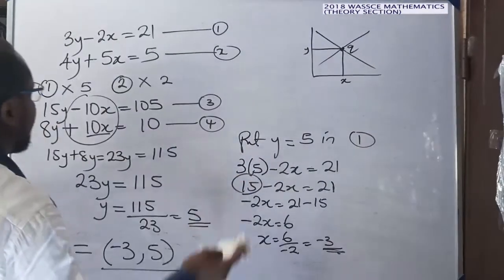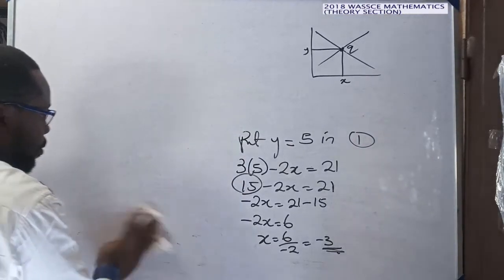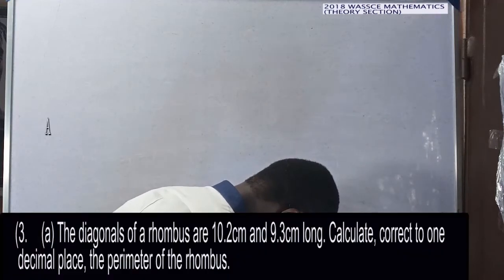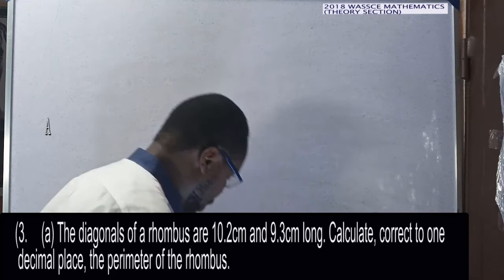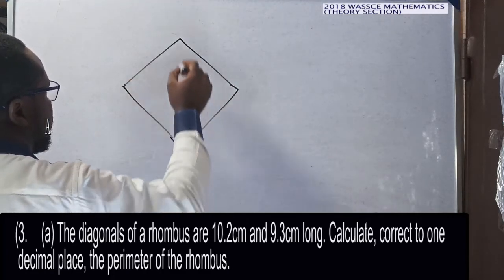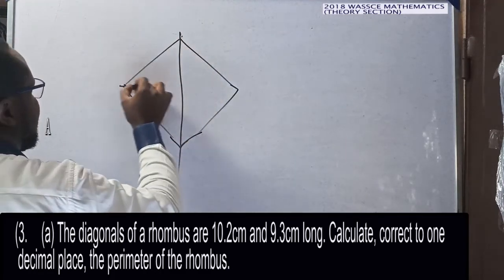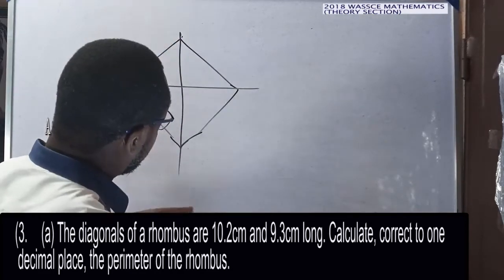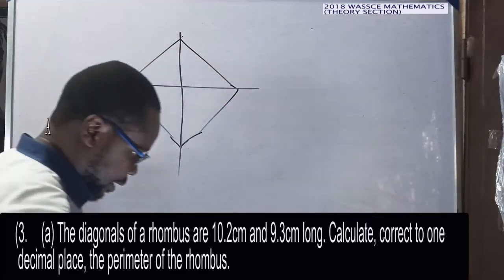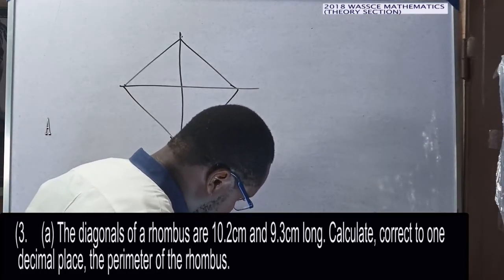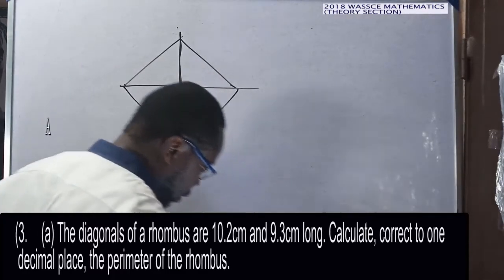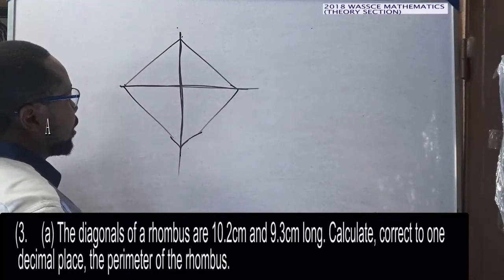Question number three: the diagonals of a rhombus are 10.2 and 9.3 cm long. The rhombus looks like this. In a rhombus, all sides are equal. The diagonals go from corner to corner — one diagonal is 10.2 cm and the other is 9.3 cm.